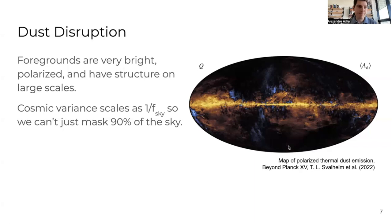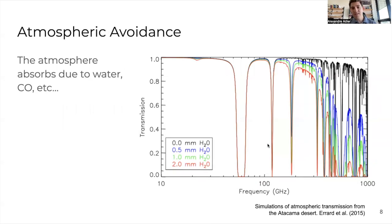What one could try to do is observe just a very small patch of the sky that's almost clean of dust. But if we want to probe the sky on very large angular scales, it's suboptimal to observe only a small patch. Cosmic variance scales as one over the sky fraction you're observing, which means the signal will get swamped by cosmic variance if you observe only a small dust-free patch.